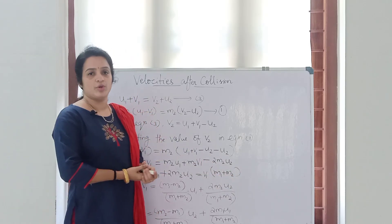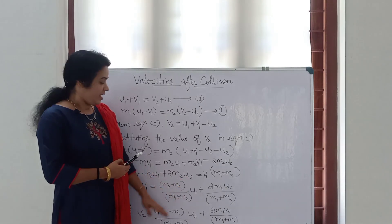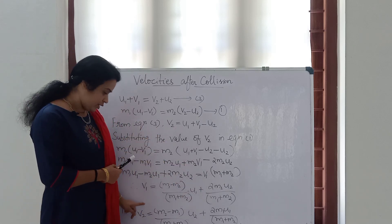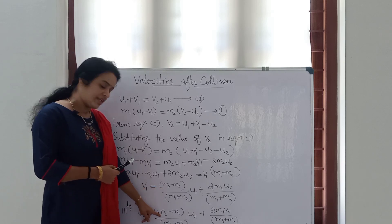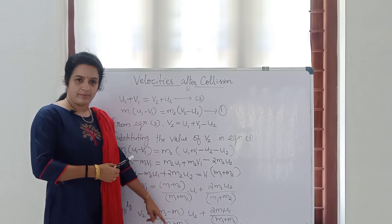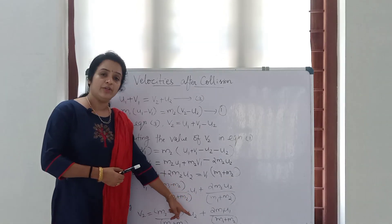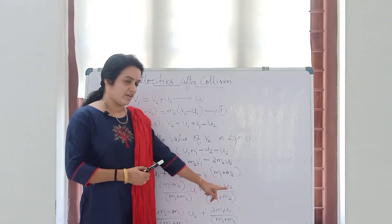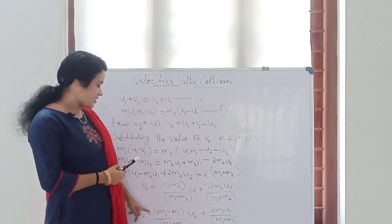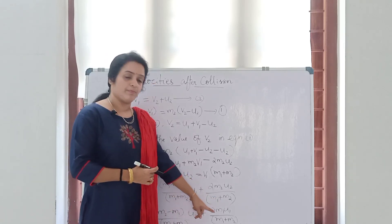Now we have to find the equation for v2 also. To find v2, we just replace m1 with m2, m2 with m1, u1 with u2, and u2 with u1. So v2 will be equal to (m2 minus m1) divided by (m1 plus m2) into u2, plus 2 m1 u1 divided by (m1 plus m2). That is the expression for v2.